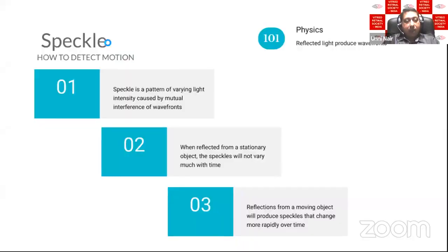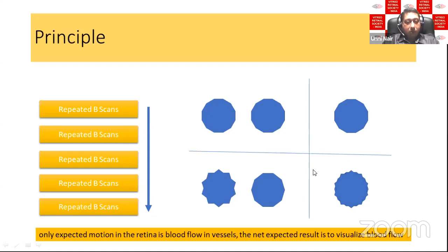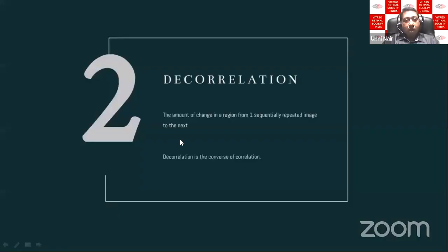There are four tenets of OCTA: the detection of a speckle, the scanning of a volume, understanding what decorrelation is, and viewing using en-face. A speckle is a wavefront produced by light. When a wavefront is reflected off a stationary object it doesn't vary, but when reflected off a moving object it produces a change called a speckle. In OCTA, repeated B-scans are done on a single point — any change indicates movement, and in the eye the only moving object is the red blood cell, thus blood vessels are visualized.